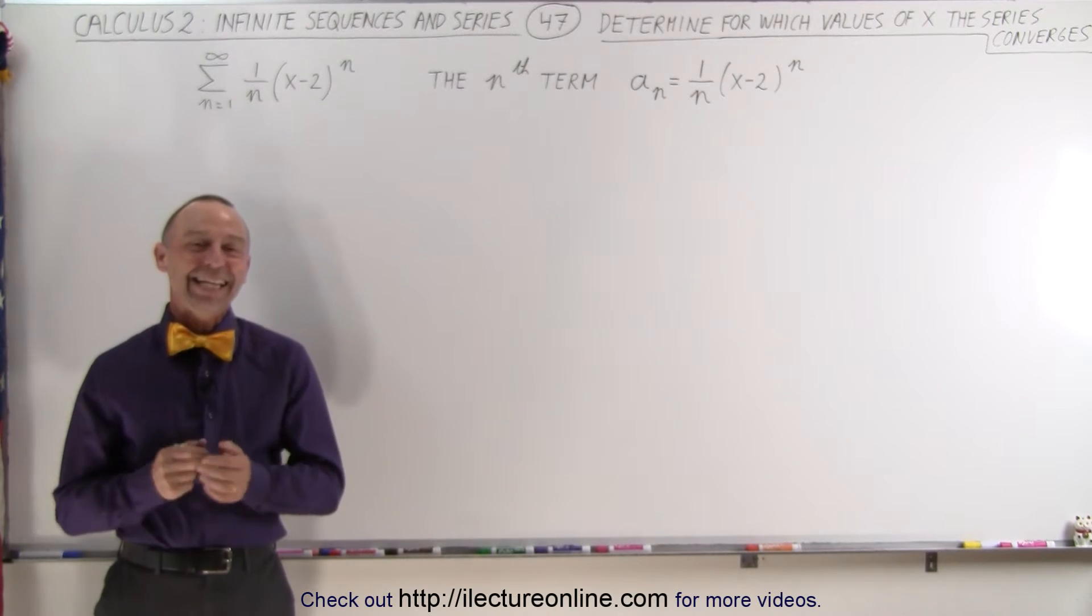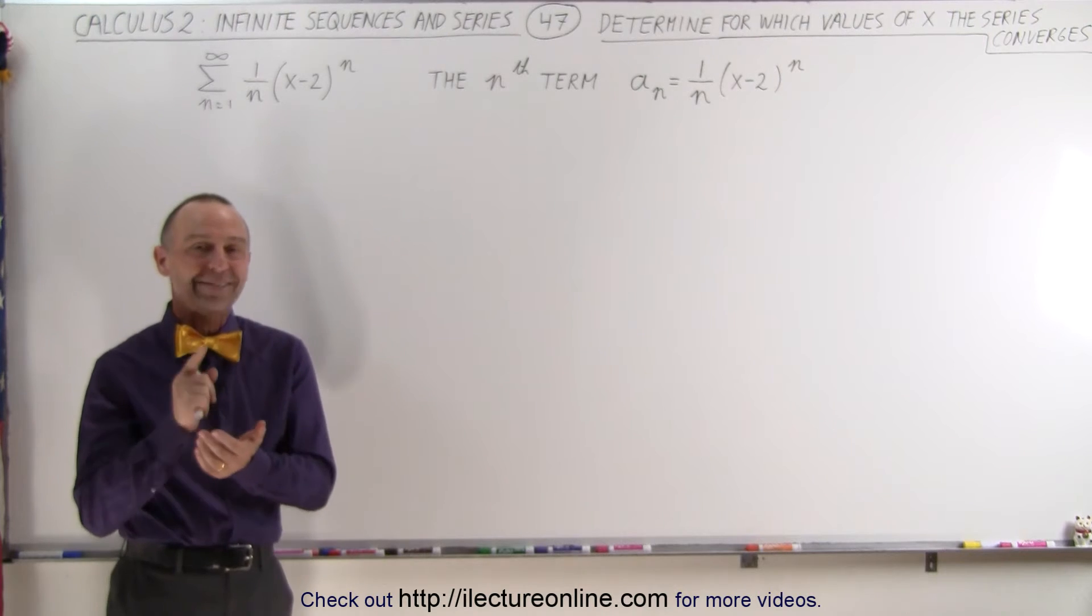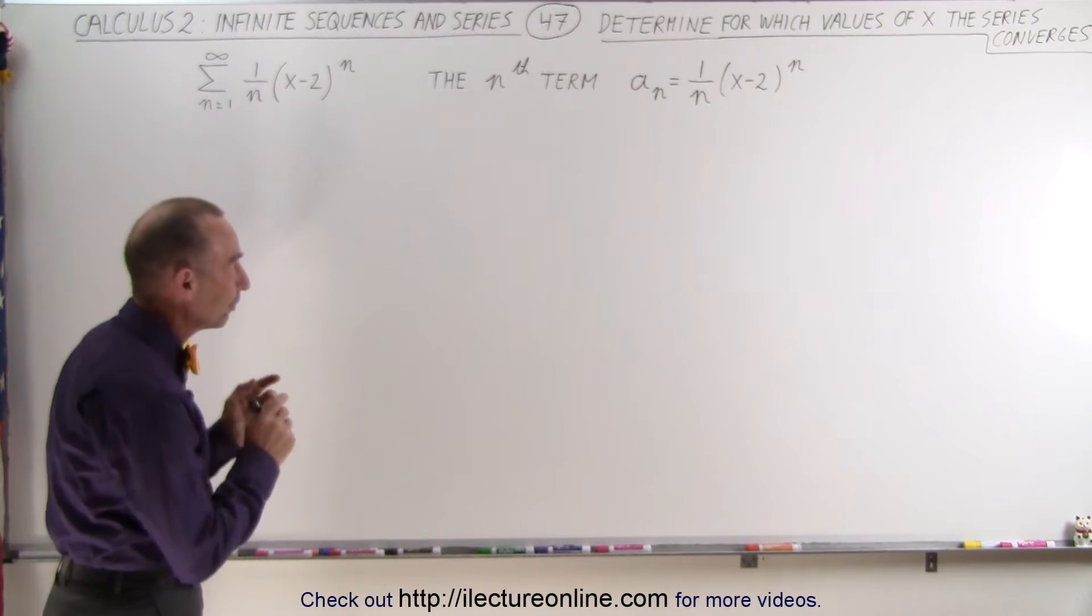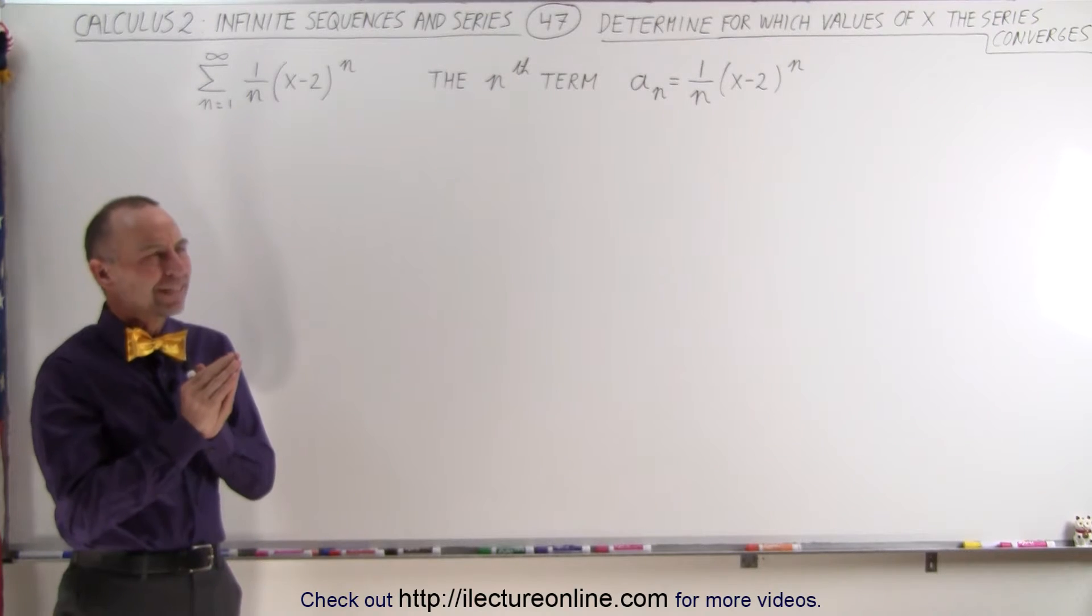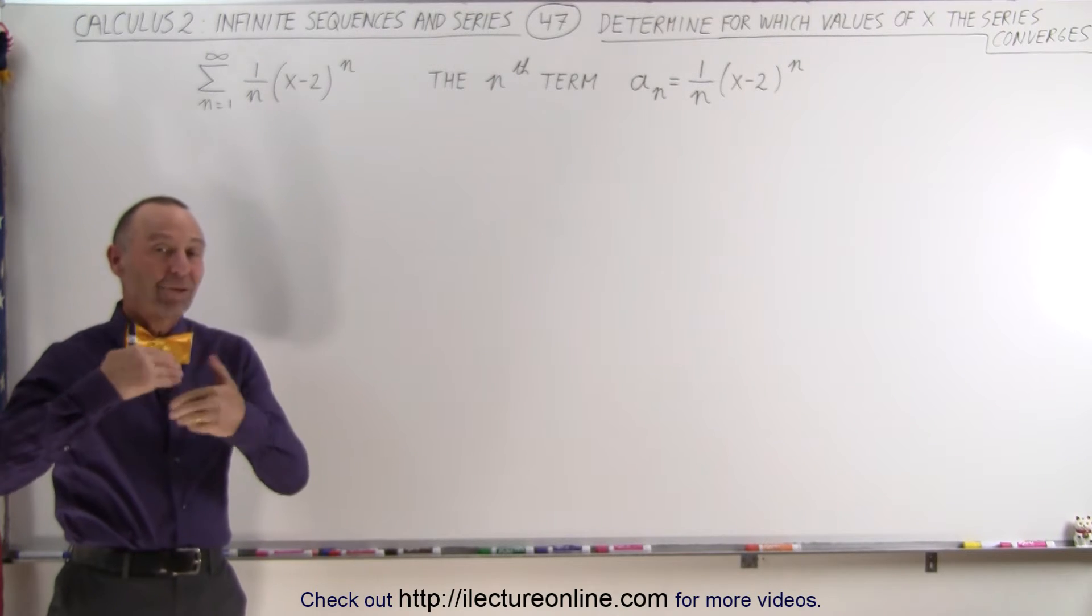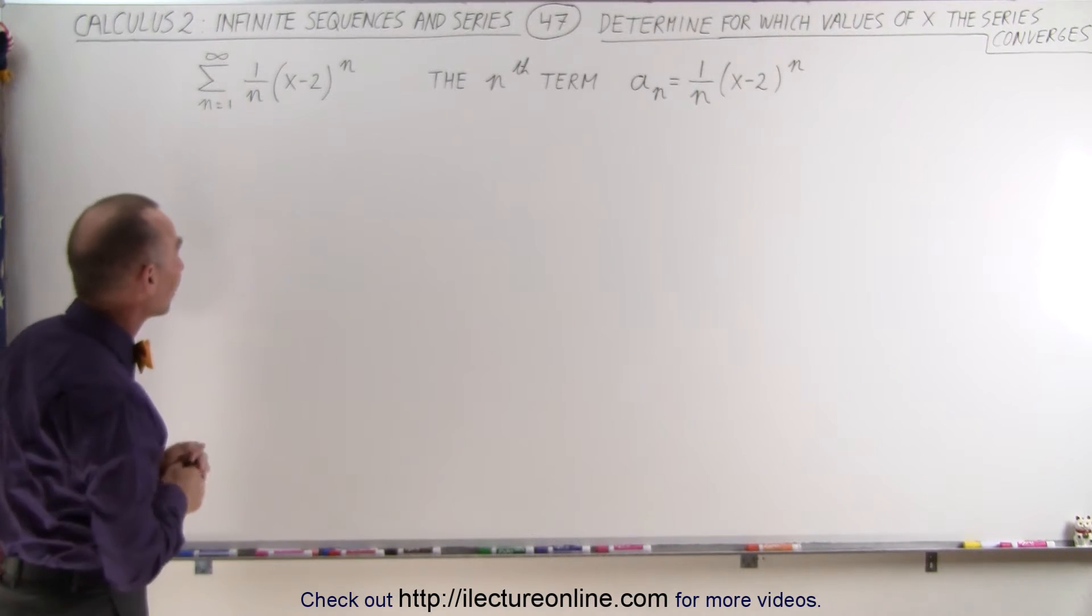Welcome to Electrical Line. In this video we're going to try to determine for which values of x this series will converge. The way we're going to do that is by finding the ratio and then as n goes to infinity we want that ratio to go to 0, to the smallest number possible.